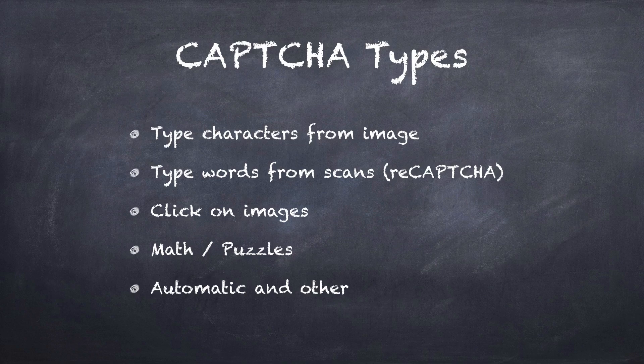There are other types too. Some are automatic now — just a little checkbox you check. What it's actually doing is looking at your cursor movements and the timing of you hitting that checkbox. A computer is going to be much more deliberate in doing that, whereas a human is going to have a human touch to actually manipulating that interface. The most common one, though, is still typing those characters from an image.